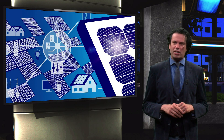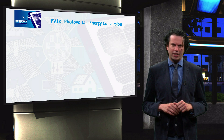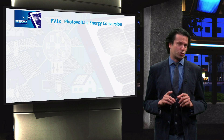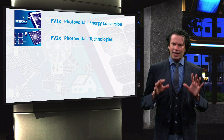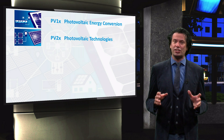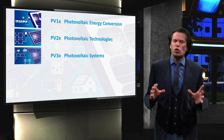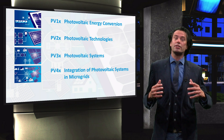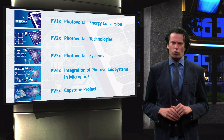The Solar Energy Engineering MicroMasters program consists of five courses. We start with PV1x, Photovoltaic Energy Conversion. In this course we will discuss the fundamental physics required to understand the operation of solar cells. We will apply this knowledge in the second course PV2x, Photovoltaic Technologies, where we will discuss the properties, advantages and limitations of different PV technologies that are manufactured. In the third course, PV3x, Photovoltaic Systems, we will use the solar panels together with other components to create PV systems, while in the fourth course we will integrate the PV system into microgrids.